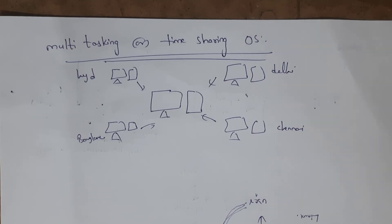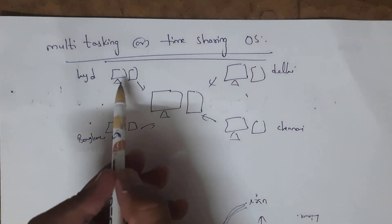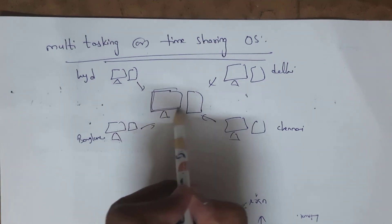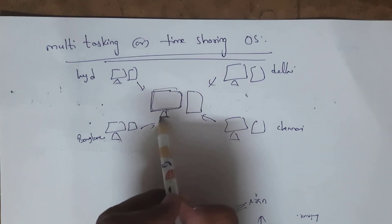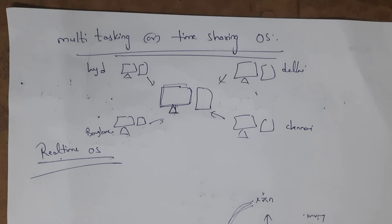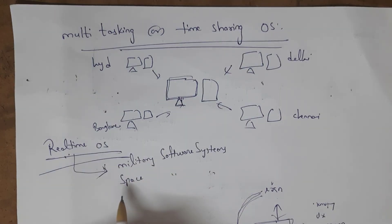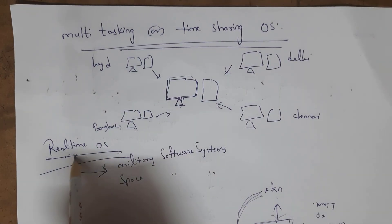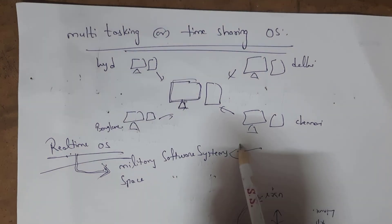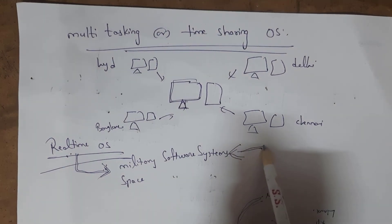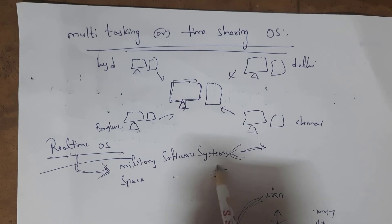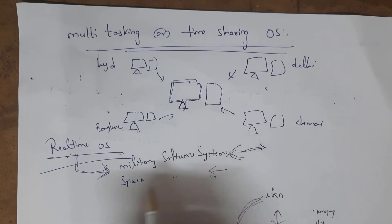A multitasking or time-sharing operating system allows different users located in different places to access the same computer at the same time via the internet. A real-time operating system gives a response within a very short period of time. Military software systems and space software systems are examples of real-time operating systems — if there is any crime or bomb blast, the military OS gives immediate response, and if there are changes in space, the space software system responds immediately.